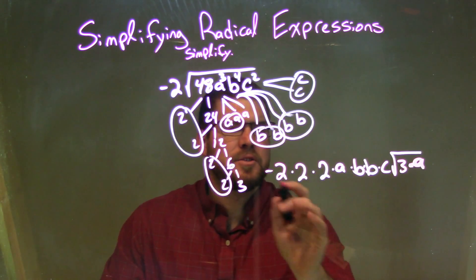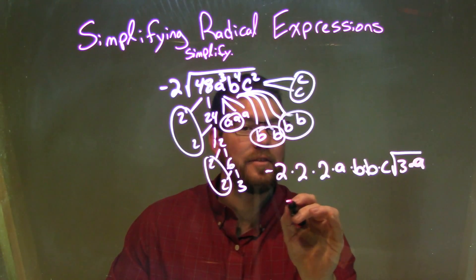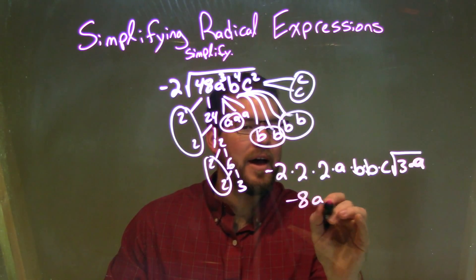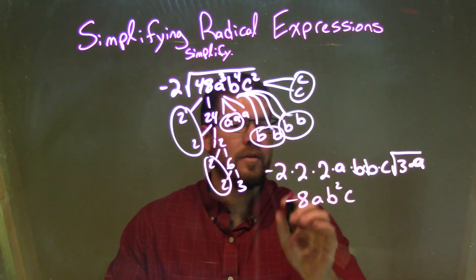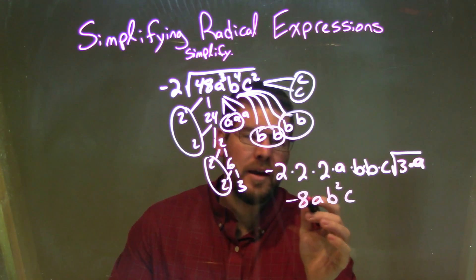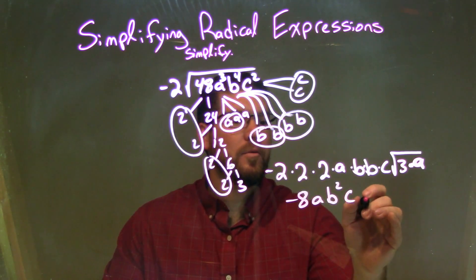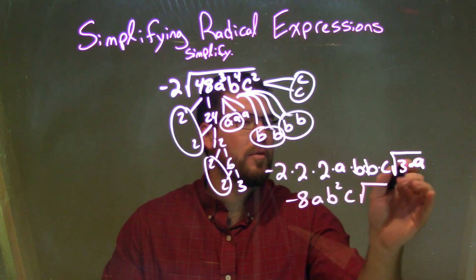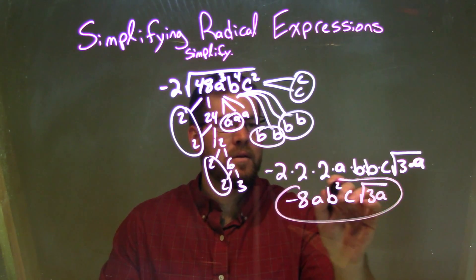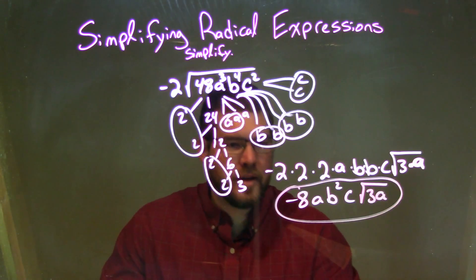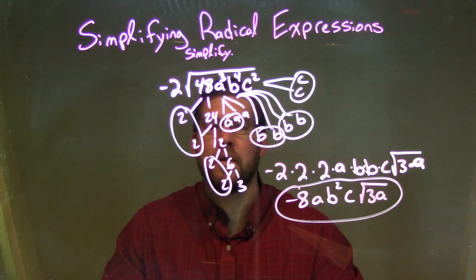So now let's simplify. Negative 2 times 2 times 2 is negative 8. We have a, b times b is b squared, and c. So we have negative 8ab squared times c times the square root of what's left inside the square root, just 3a. And that is our final answer: negative 8ab squared c times the square root of 3a.